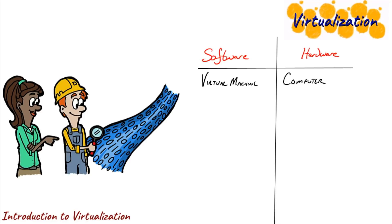And then just like with a physical computer, what do you do after you get the chassis? You've got to install an operating system and install the applications and do all the work that it takes to get a computer really up and running. And that work it takes to finish up a computer is the same work we're going to have to do to finish up a virtual machine. But there are other elements where software is pretending to be hardware as well.